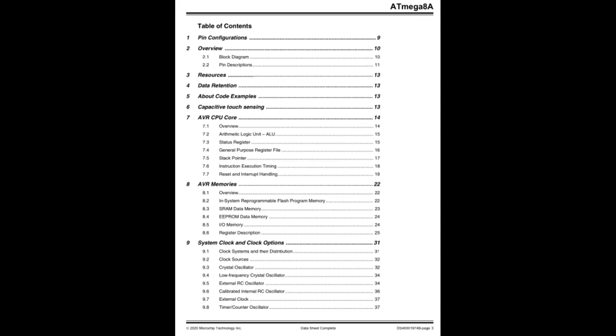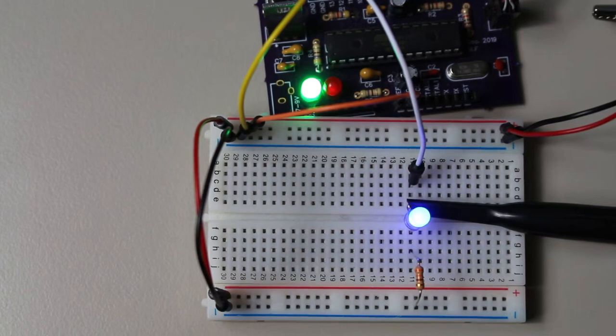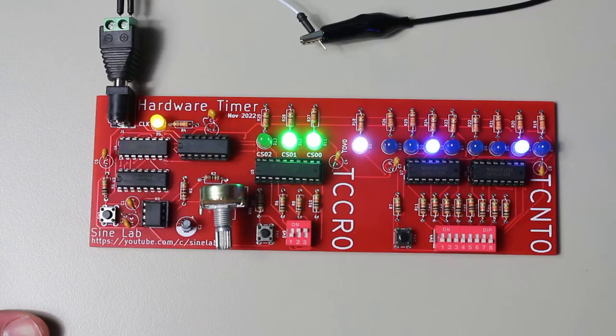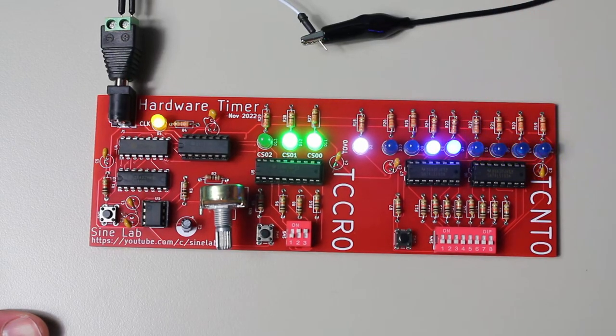Take for instance, the standard blinking LED example that everyone is familiar with. You simply delay the CPU in order to flash an LED at a specified interval. But what if you wanted to do other things at the same time? Well that's where hardware timers come in. They can keep track of time for you, while the CPU is free to do other things.